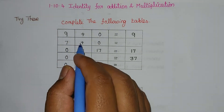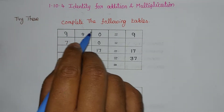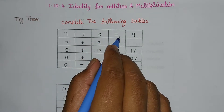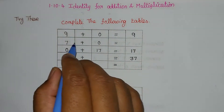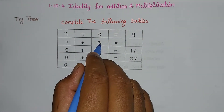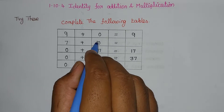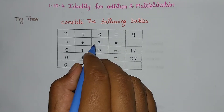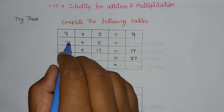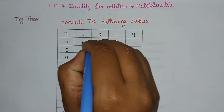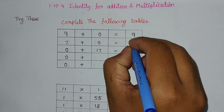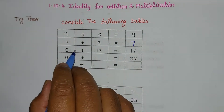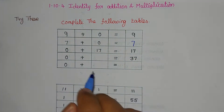Try this section: complete the following tables. 9 plus 0 equals 9. Second: 7 plus 0 — since 0 is the additive identity, 7 plus 0 equals 7. Next, 0 plus 17 equals 17.